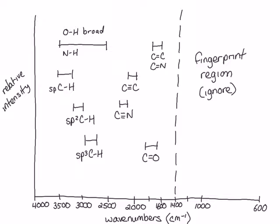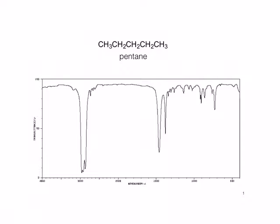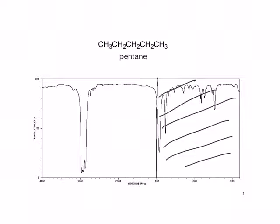Now let's look at some example spectra. This is the IR spectrum for pentane, whose structure is shown here. Remember that we're ignoring the region under 1500 wavenumbers, which is the fingerprint region. The main peak that we see is just below 3000 wavenumbers, which is due to the SP3 carbon-hydrogen stretch, consisting of several sharp peaks between 2800 and 3000 wavenumbers.